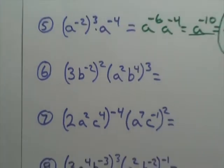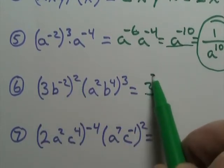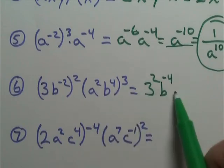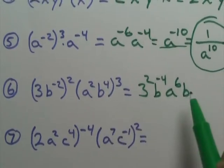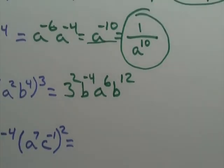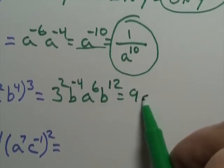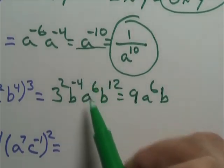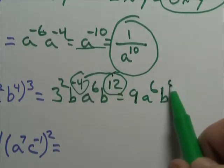Number 6. That's 3 squared. B to the negative 2 — negative 2 times 2 is negative 4. Then I have A to the 2 times 3, that's 6. Then I have a B to the 4 times 3, that's 12. So now I have 3 squared — 3 times 3 — that's 9. Then I have A to the 6th. And then I have a B to the negative 4 and positive 12. 12 minus 4 is 8.